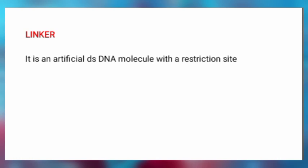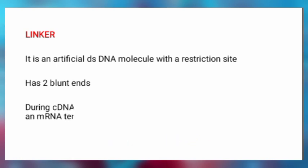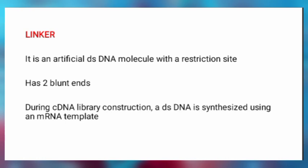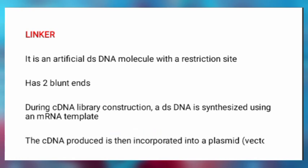Now that we understand how Restriction Enzymes help us generate a sticky end, let's move on to a linker. A linker is an artificial double-stranded DNA molecule that has a Restriction Site located in it, and both ends are blunt. We use linkers when we want to generate a sticky end in the cDNA molecule that we are going to synthesize. Because it has a Restriction Site located in it, we can end up generating a sticky end from it.